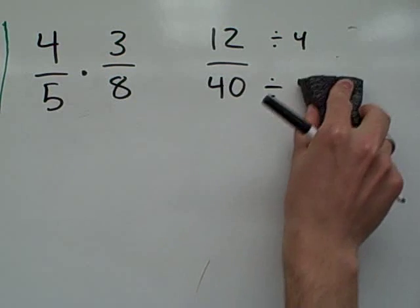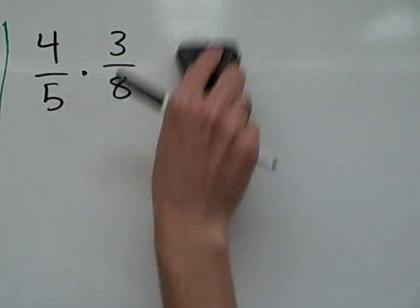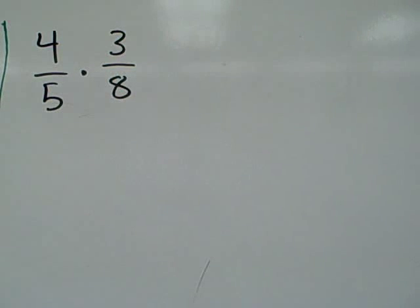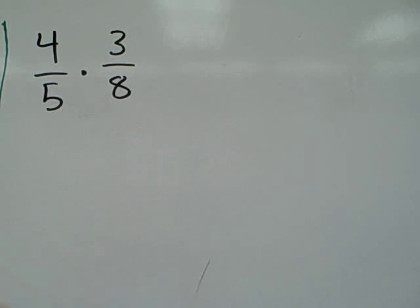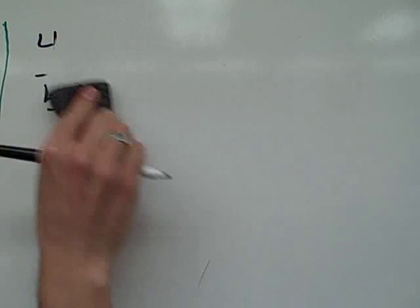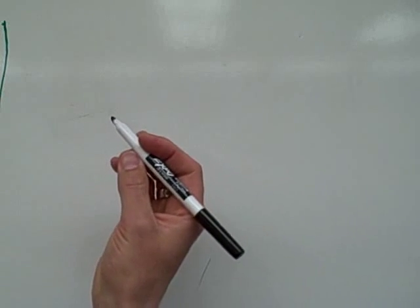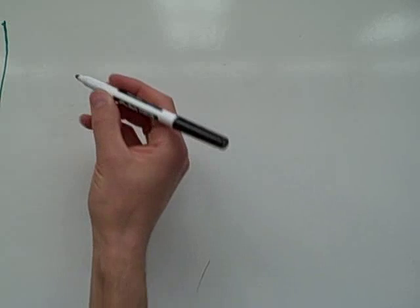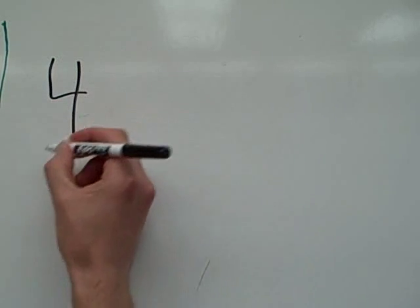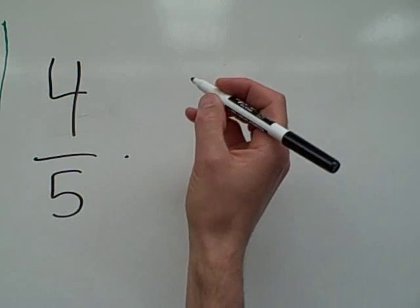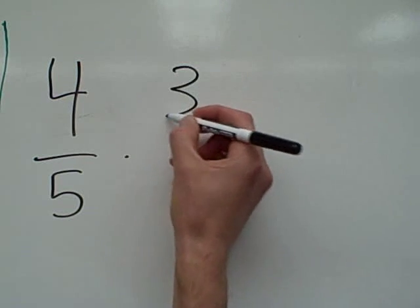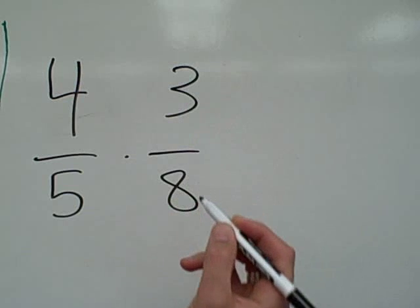Now let's start back at the beginning, and we are going to cross-divide this time, or cross-cancel before we multiply. It's going to be so awesome! Let's write that fraction again, a little bit larger this time: four-fifths times three-eighths.